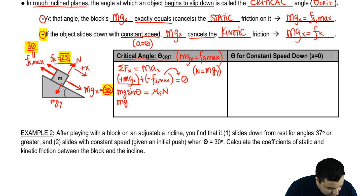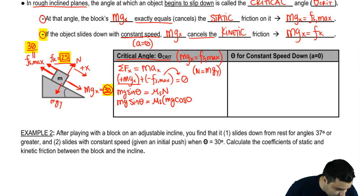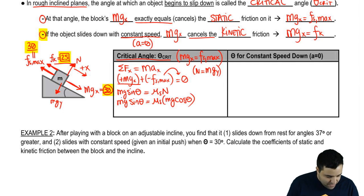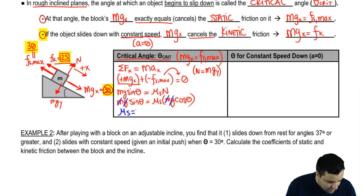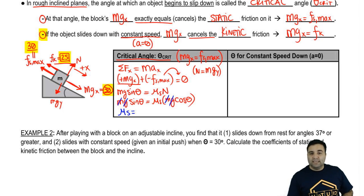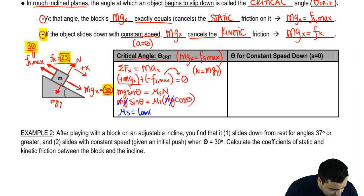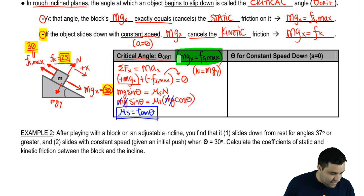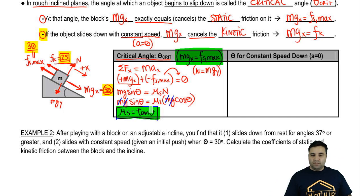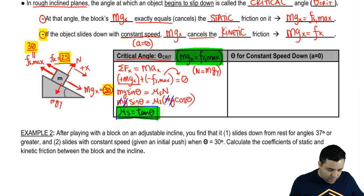This becomes MG sine theta equals mu-static times MG cosine theta. M and G cancel on both sides. Dividing both sides by cosine theta gives sine over cosine — which is tangent. So mu-static equals the tangent of theta, derived directly from a simple F equals MA setup.